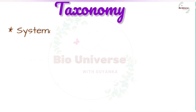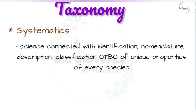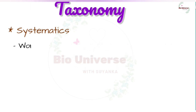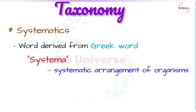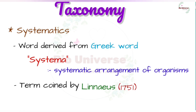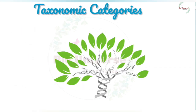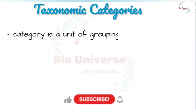Systematics is the science connected with identification, nomenclature, description, and classification of organisms based on the unique properties of every species and groups of species at every level of classification. The word systematics is derived from the Latin word systema, which means systematic arrangement of organisms. The term systematics was coined by Linnaeus in 1751. Classification is not a single-step process but involves a hierarchy of steps in which each step represents a rank or category. A category is a unit of grouping in a system.